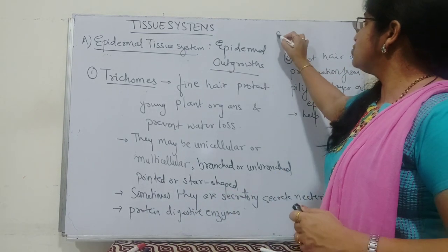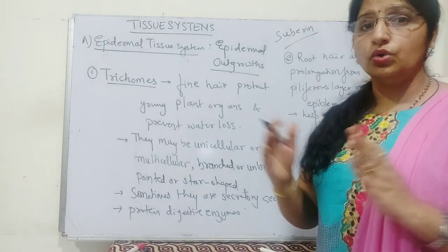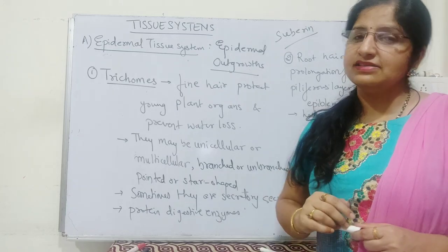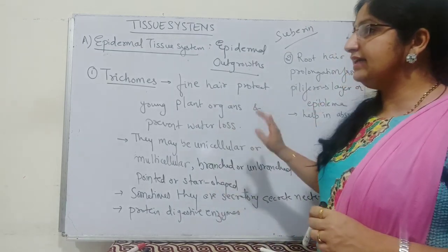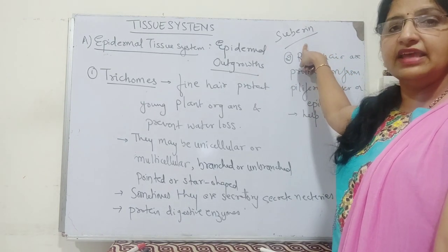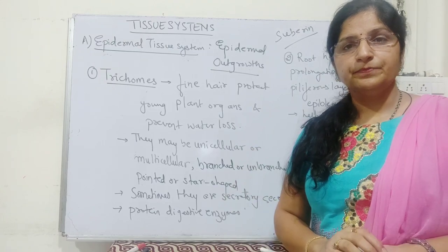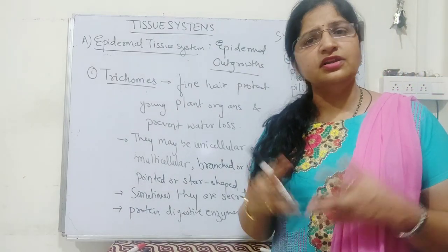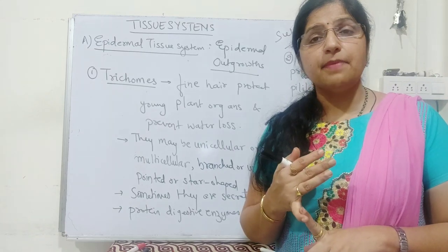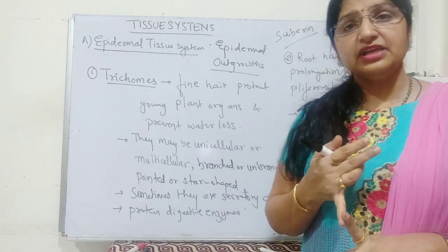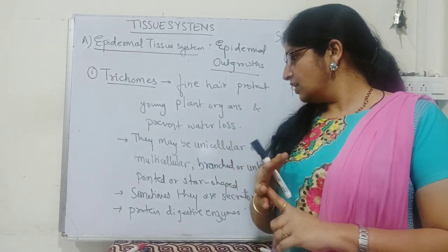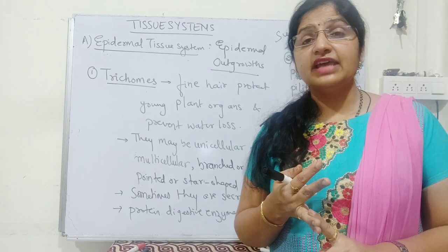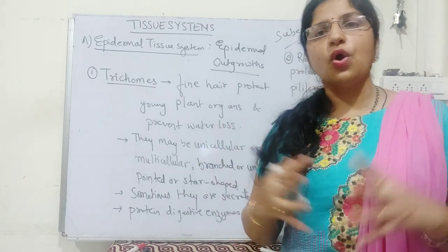When a plant moves toward secondary growth, the living parenchymatous epidermal cells are replaced by dead cork cells with suberin deposits that prevent water loss. The functions of the epidermal tissue system include: protection from the external environment, gaseous exchange, secretion via glandular trichomes, and absorption of water and minerals from the soil through root hairs.